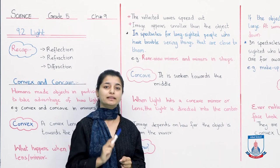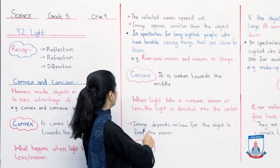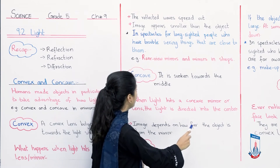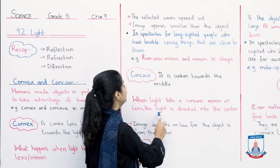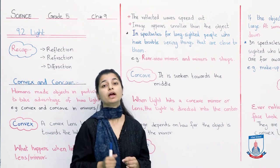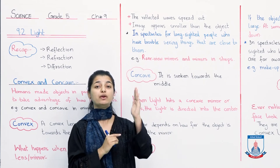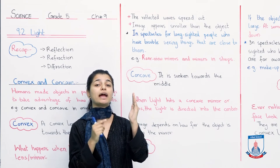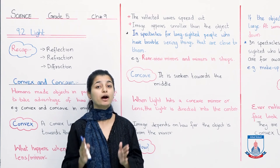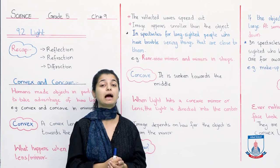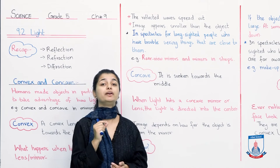When light hits the concave mirror or lens, the light is directed into the center. So when the light hits, it goes to the center. This means that it will converge. The convex lens spreads out, but concave lens directs light to the center.